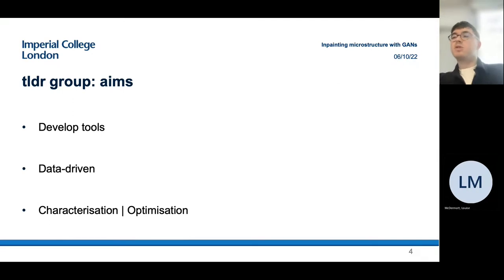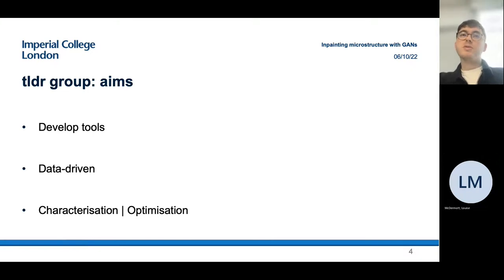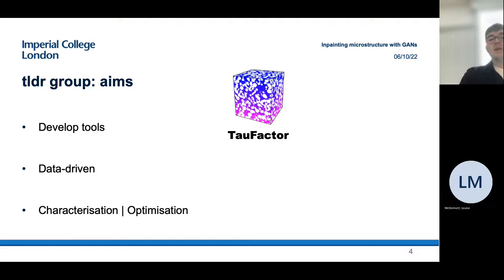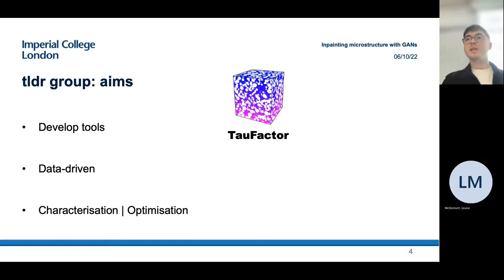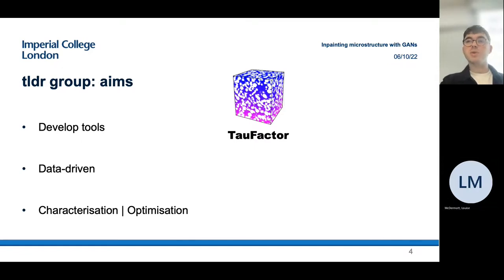In general our aims are to develop tools using data-driven methods to solve characterization and optimization problems, mainly in energy storage materials. One tool we've developed is called Tau Factor — a GPU-accelerated Laplace solver for solving diffusion and conductivity in X-ray CT images. It's available open source and very easy to use.